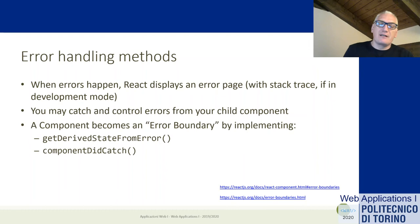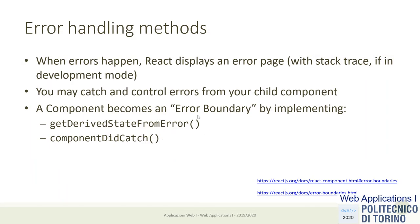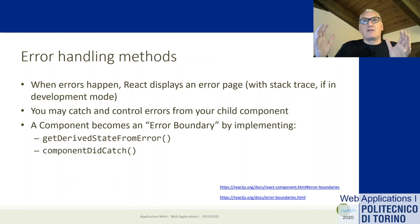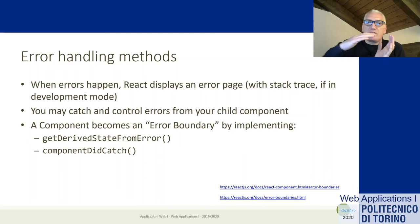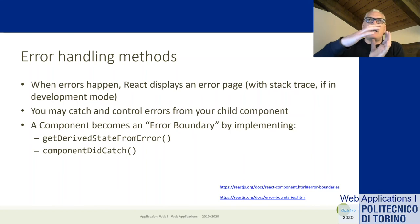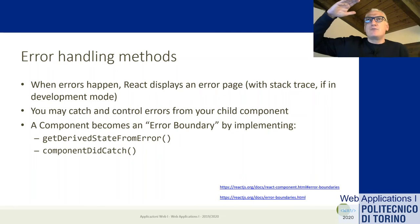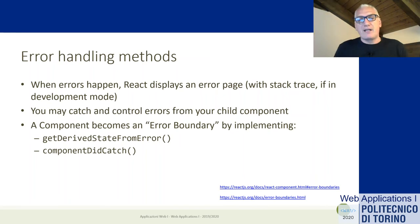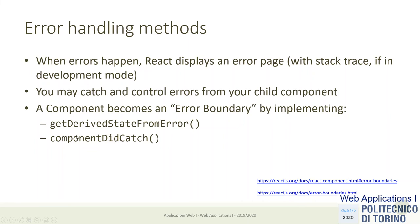If you want to catch an exception from your code and not just see it in the debugger, you can create a so-called error boundary. Any component can become an error boundary — a container where errors cannot propagate further. The error originates in some child component and propagates upward until it finds an error boundary. The error boundary is able to manage the error in some way so it does not propagate further. If no error boundary is found, the error pops up to the application and generates the error page.